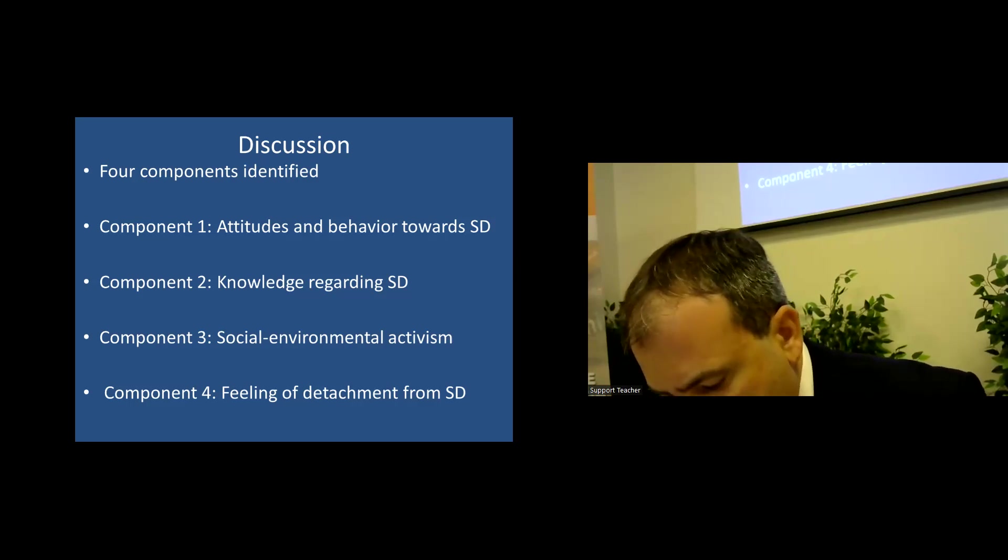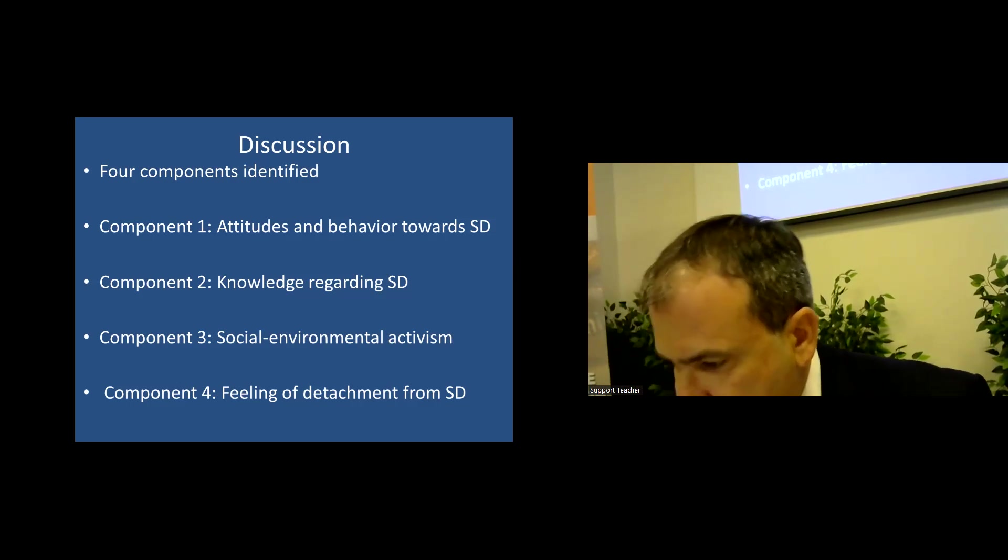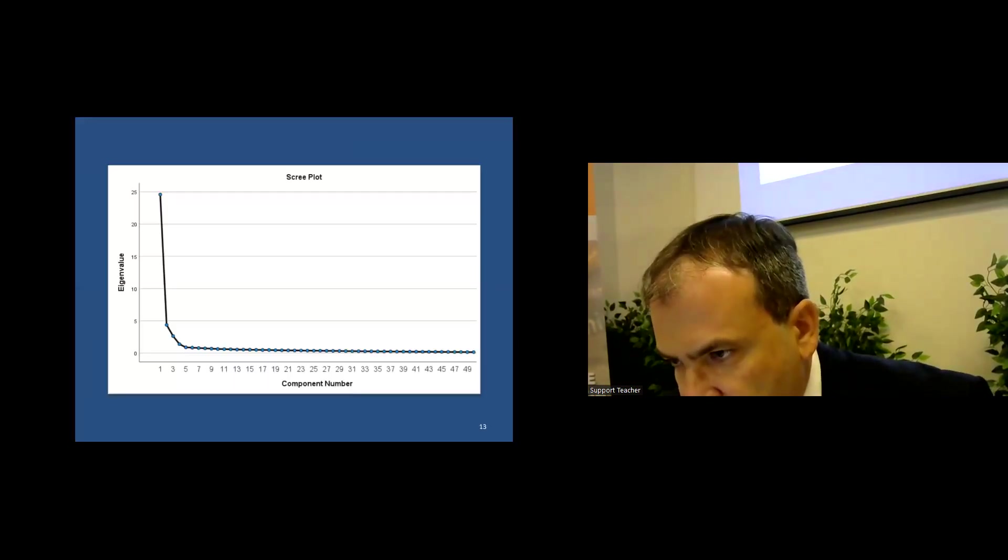Component four possesses the fourth highest eigenvalue and accounts for around 3% of the total variance. It consists of five items, one of which refers to knowledge, two to attitudes, and two to behavior. They are related with the environmental and social dimension of sustainable development.